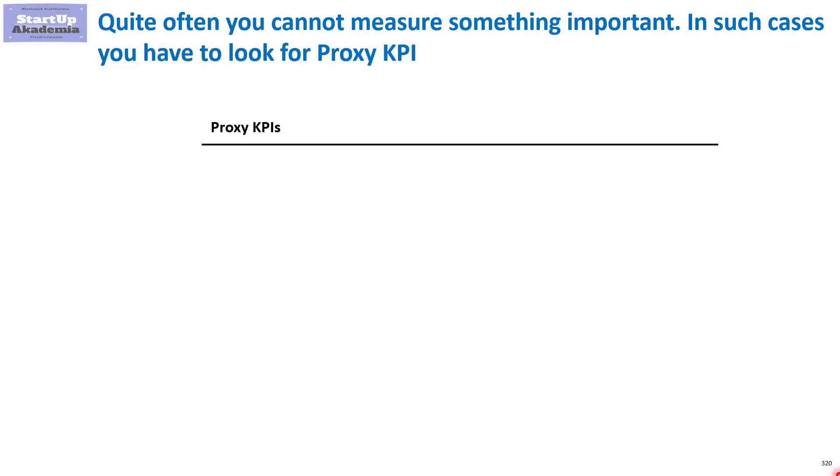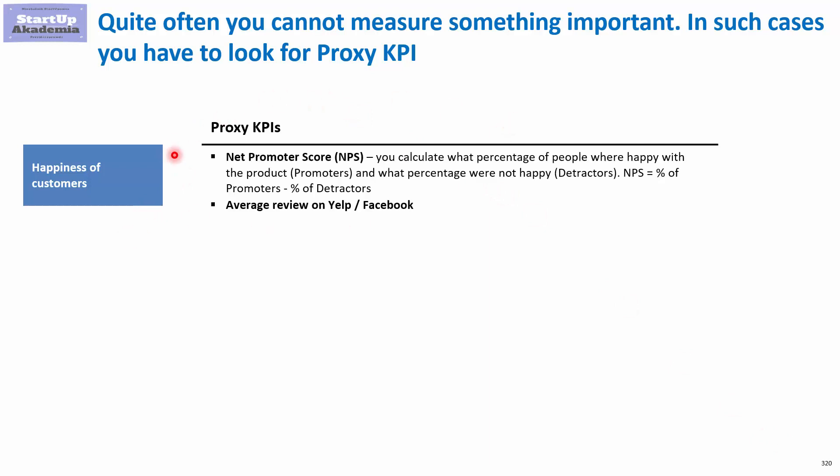Proxy KPIs: certain phenomena you cannot measure directly, therefore you have to devise a clever KPI that will enable you to somehow estimate how good or how bad you are in a certain area. Here I will show you some examples of proxy KPIs. Imagine that you were supposed to estimate the happiness of your customers — it's not measurable and it's difficult to find data for that, therefore you have to devise something which will enable you to estimate this phenomenon.